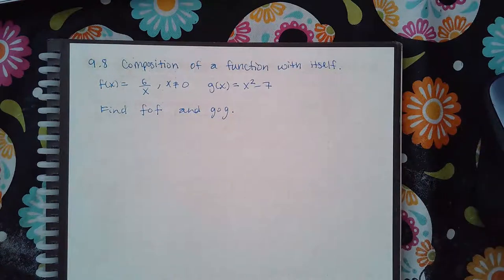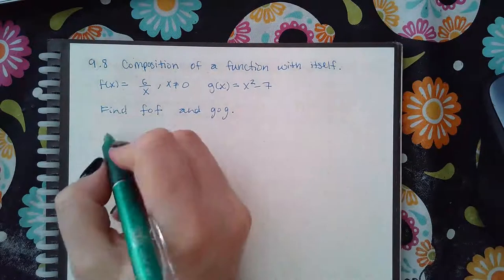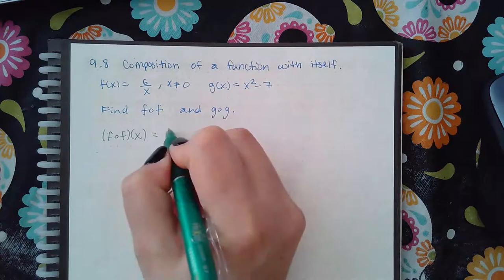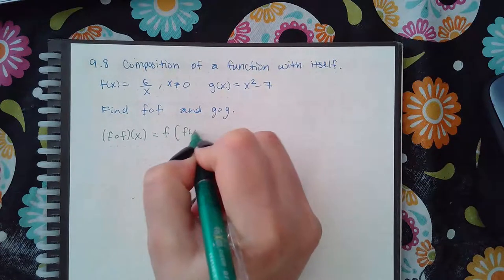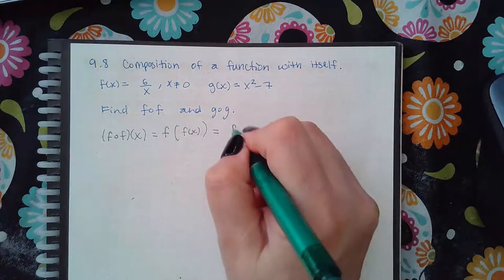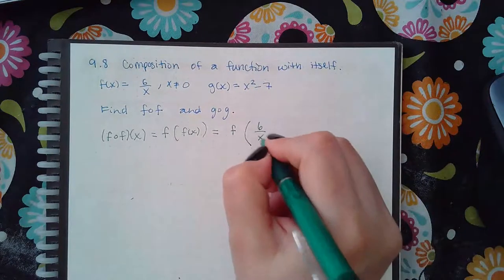Here we have the composition of a function with itself, f of x and g of g. Remember, f of f means to put f on the outside and then put f of x on the inside. That means I'm going to have f on the outside, and what is f of x? It's 6 over x.